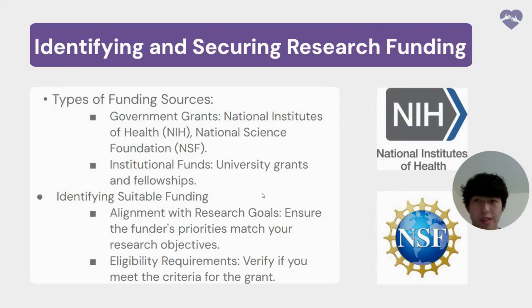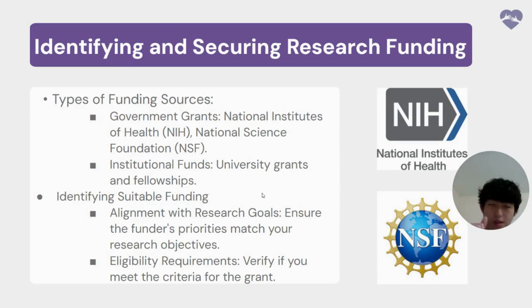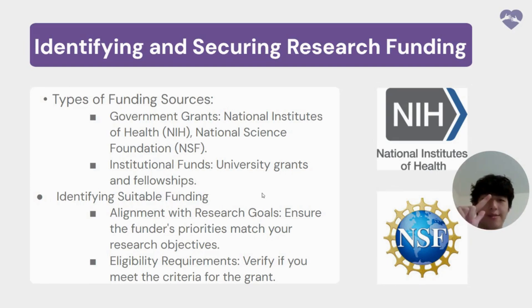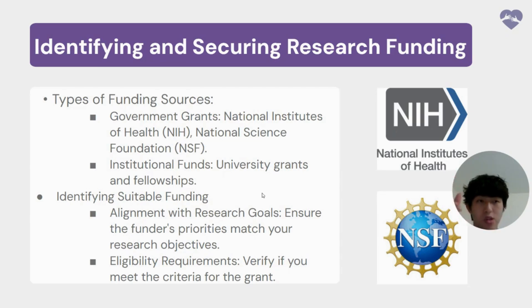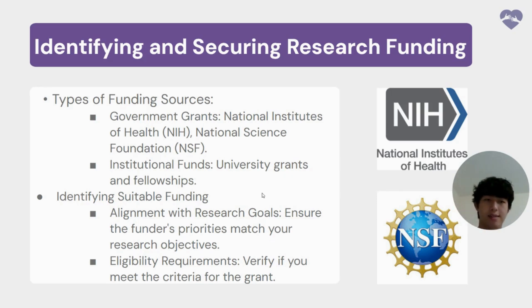Now moving on to funding. There are many different types of funding sources, but I'll focus on two main ones. The first is government grants, which include the NIH (National Institute of Health) and the NSF (National Science Foundation). The second is institutional funding, such as university grants and fellowships. This really depends on where you live — for someone from a territory like Guam, the only university with these kinds of funds is the University of Guam, which has much less capital compared to, say, Columbia University in New York.